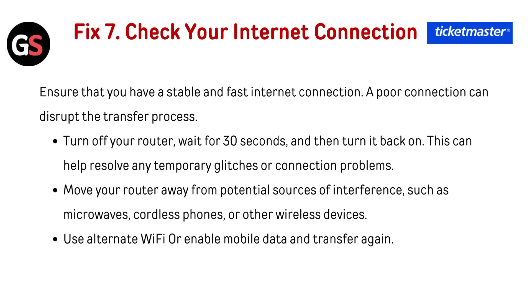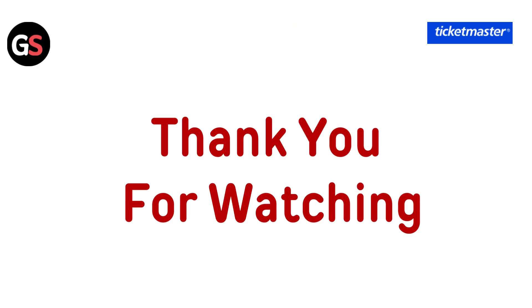Fix seven: check your internet connection. Ensure that you have a stable and fast internet connection, as a poor connection can disrupt the transfer process. Turn off your router, wait 30 seconds, and then turn it back on to resolve temporary glitches. Move your router away from potential sources of interference such as microwaves, cordless phones, or other wireless devices. You can also use alternate Wi-Fi or enable mobile data and try transferring again.